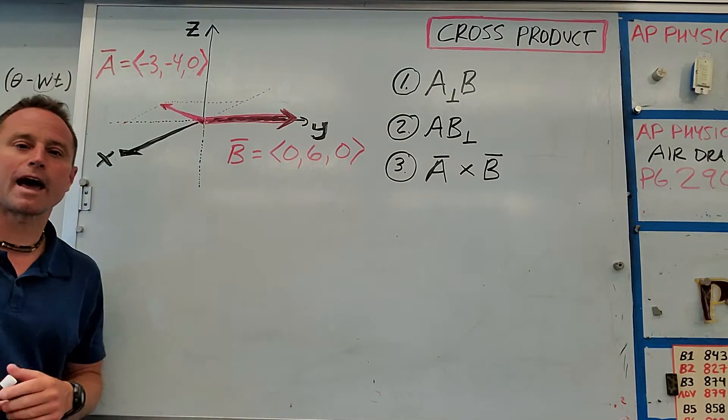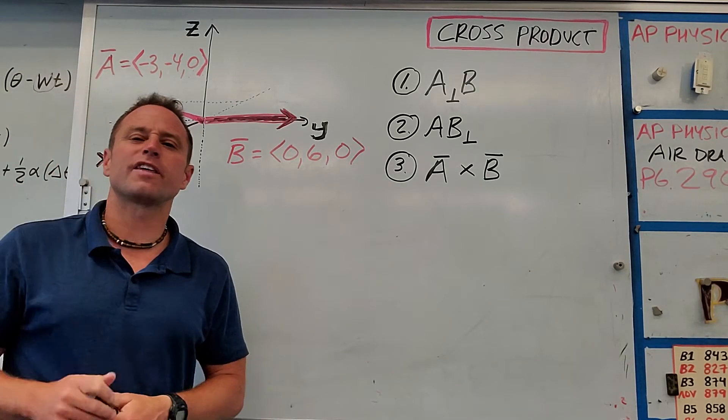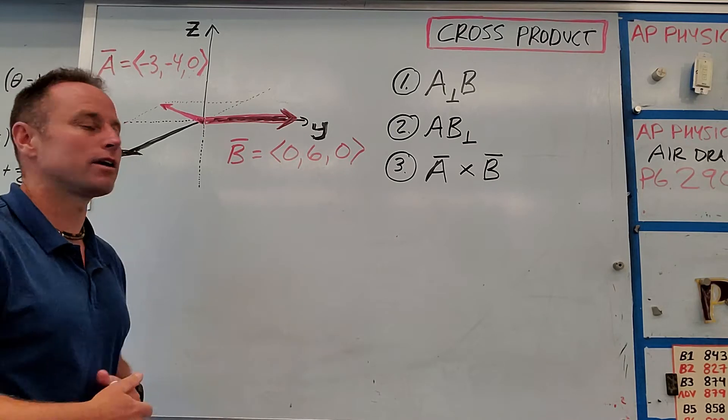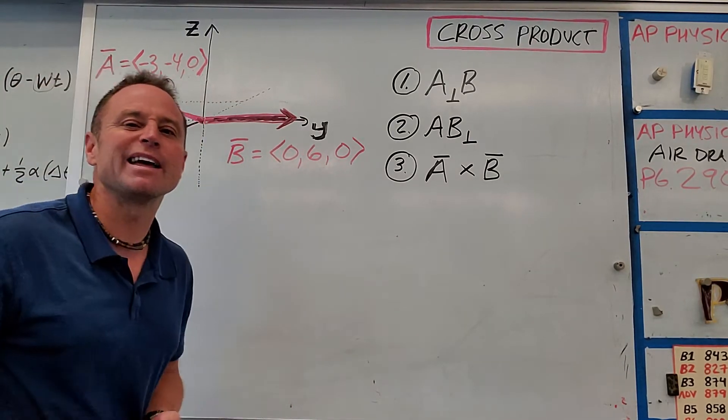All right, we're going to take a look at a couple ways to calculate the cross product of two vectors. The first thing to think about that's really easy is to get the direction that the cross product will point in. And I'm going to teach you a quick what's called right-hand rule for doing that.